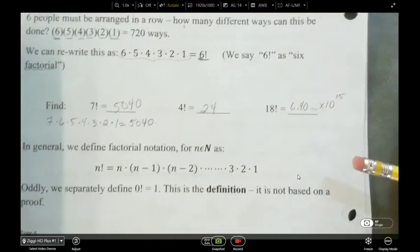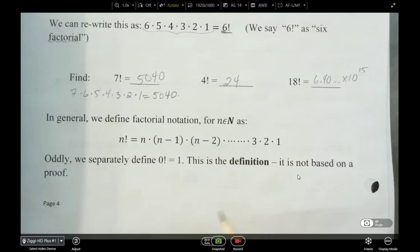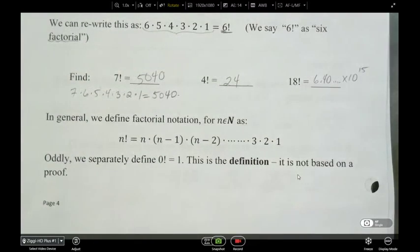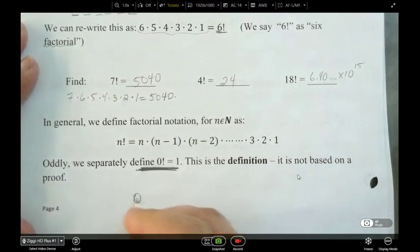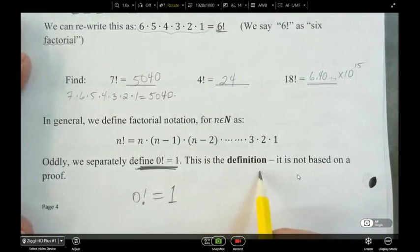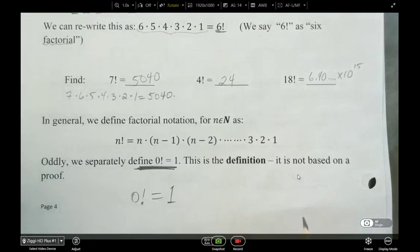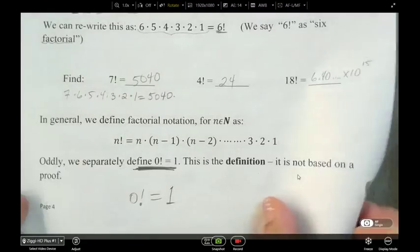So now we're going to look at how to use it in a more general way and how we can actually use it when we're solving for something. One thing you need to know, the definition of 0 factorial is actually equal to 1. And this is a definition. It's not based on a proof. Just think of it as a placeholder.